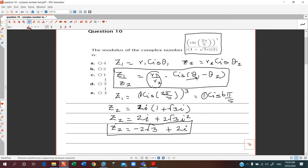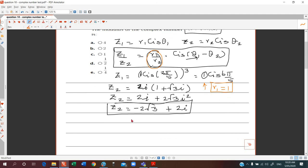For z1, what are we interested in? r1 is 1. That's all we need because we want to find the modulus of this complex number. So the modulus of this complex number would be basically r1 divided by r2. To find r2, we have to just use the distance formula: r2 equals square root of...